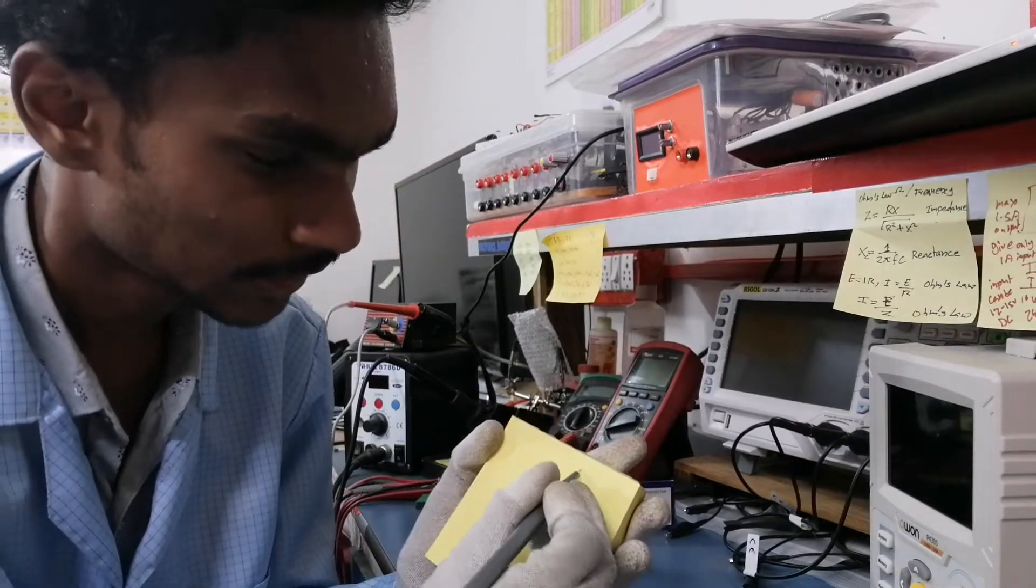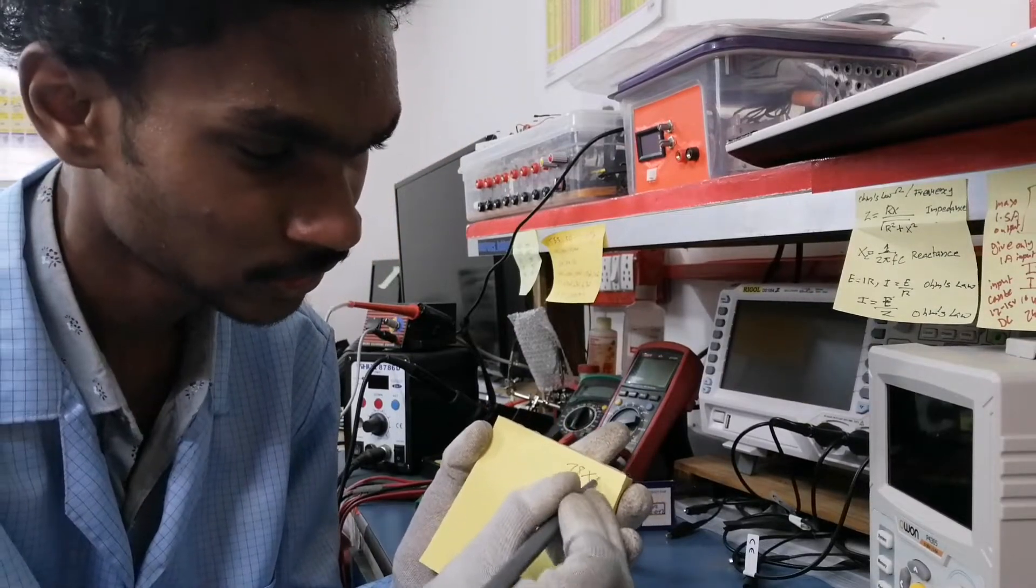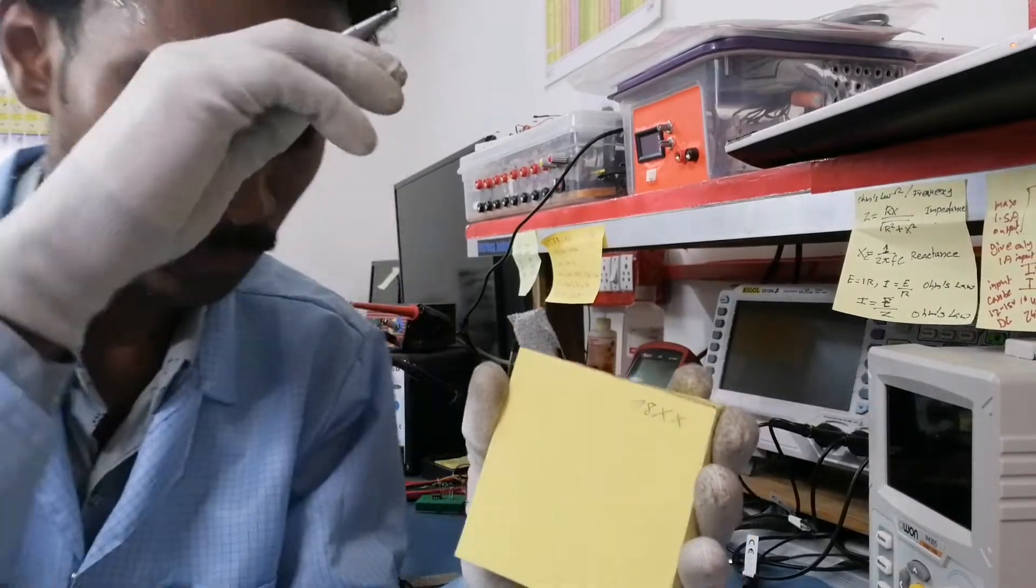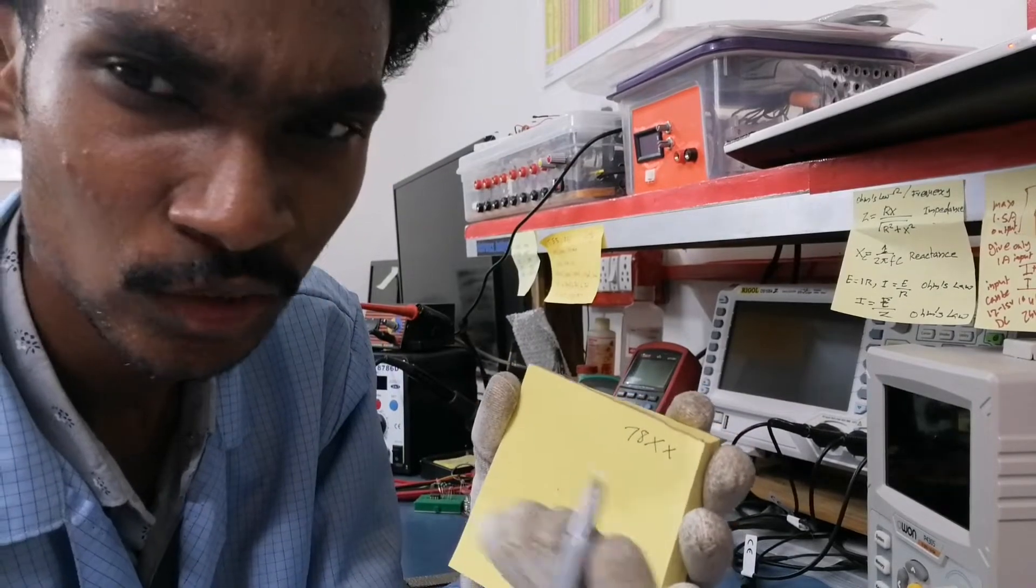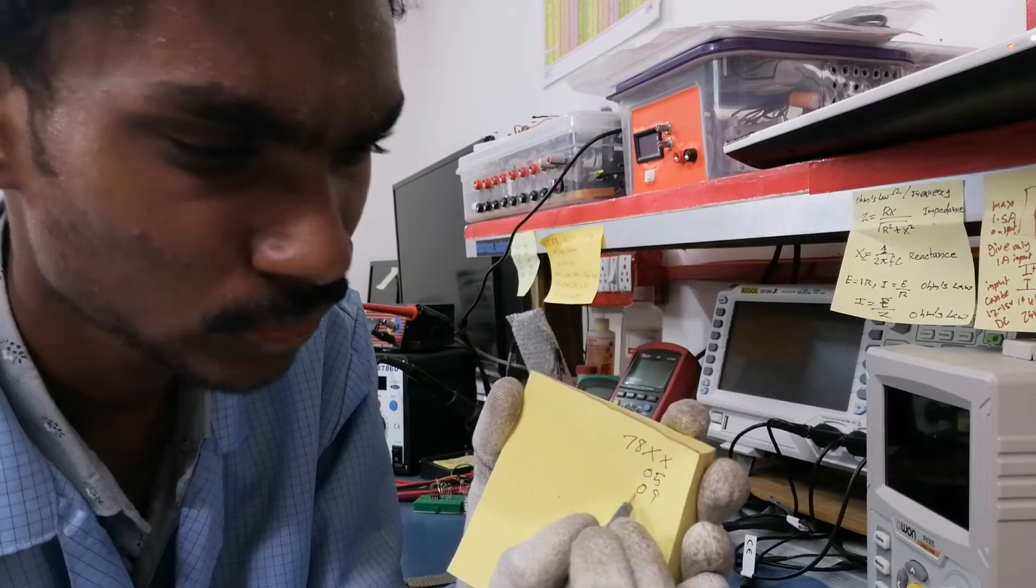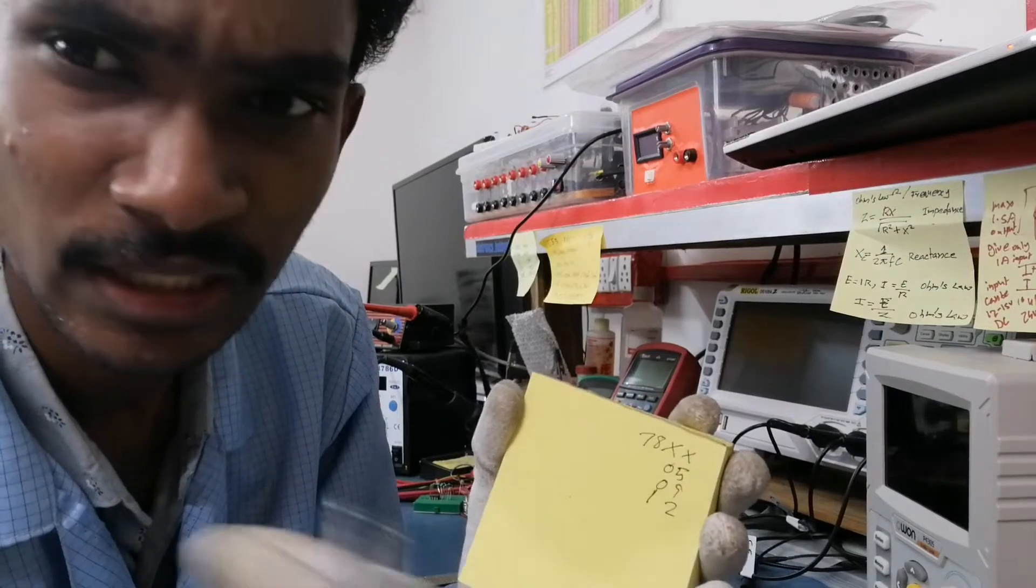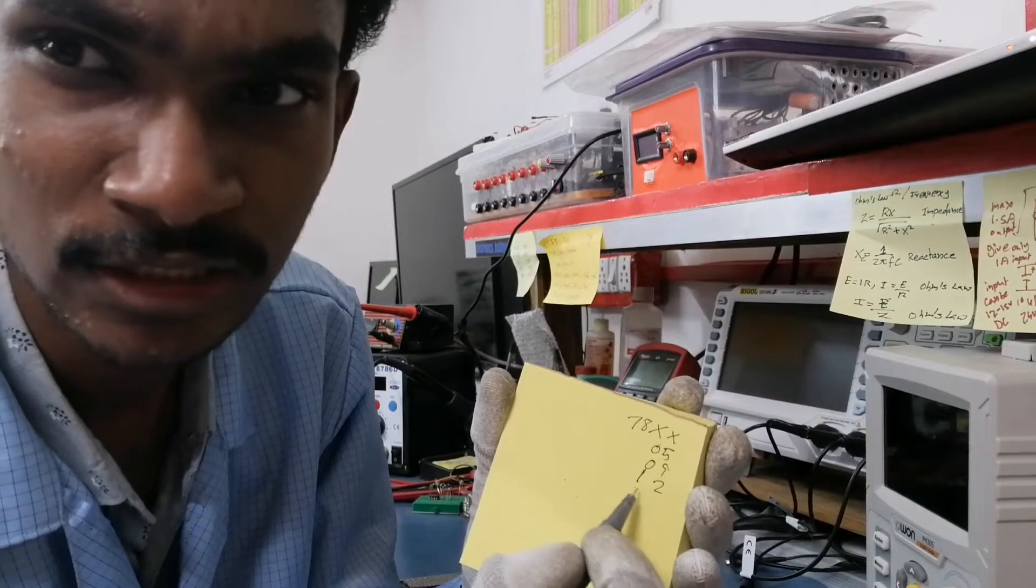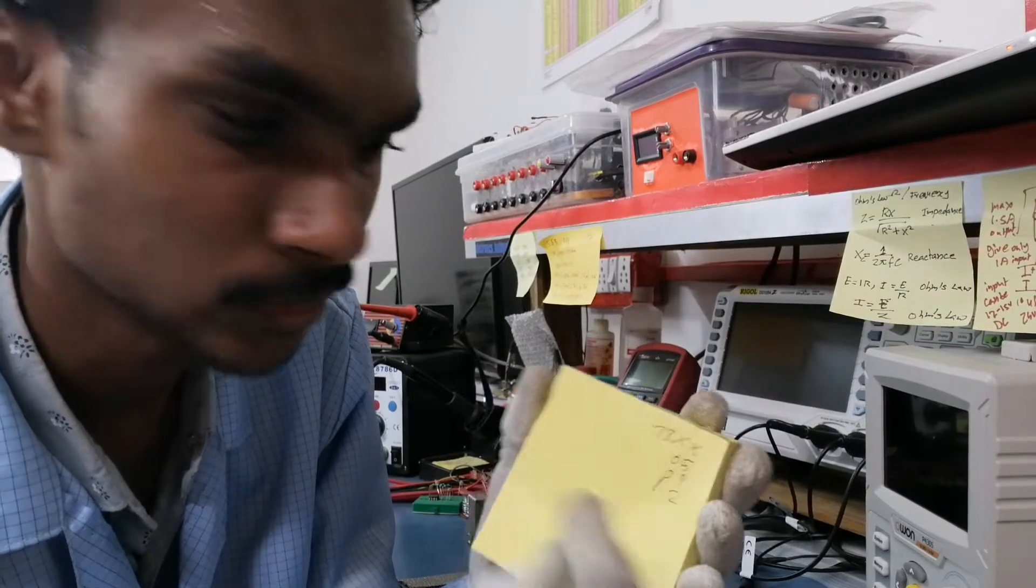First, we have 7805. We have 2 sets. We have the sets - 05, 09, 012. I have to use it. I have the set.